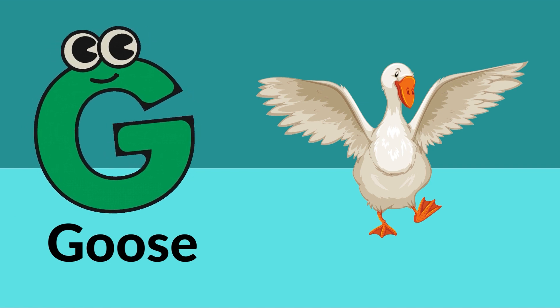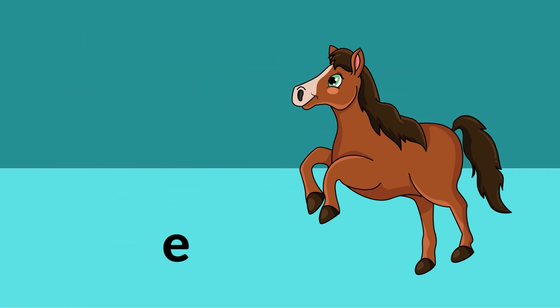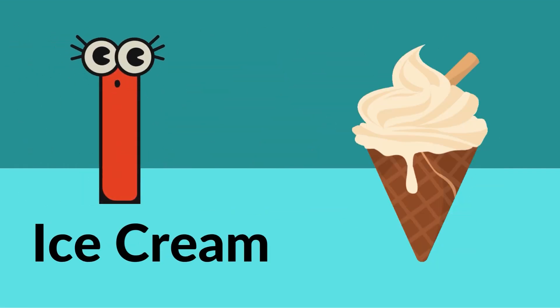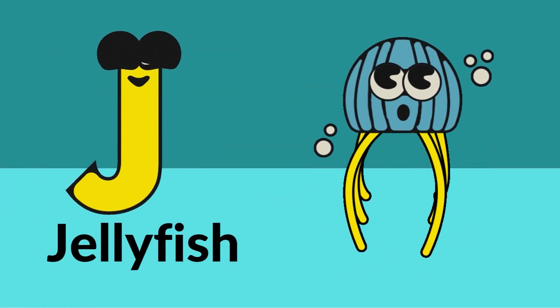H is for horse, I is for ice cream, J is for jellyfish.